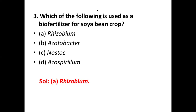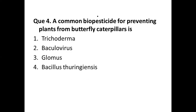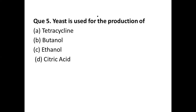Question number four: a common biopesticide for preventing plants from butterfly caterpillars. Options are: (a) Trichoderma, (b) Baculovirus, (c) Glomus, (d) Bacillus thuringiensis. The correct answer is Bacillus thuringiensis (Bt). It is found naturally in soils; Bt spores have proteins that are toxic to insect larvae. Many types of Bt are toxic to beetles, flies, mosquitoes, butterflies, moths, and blackflies.